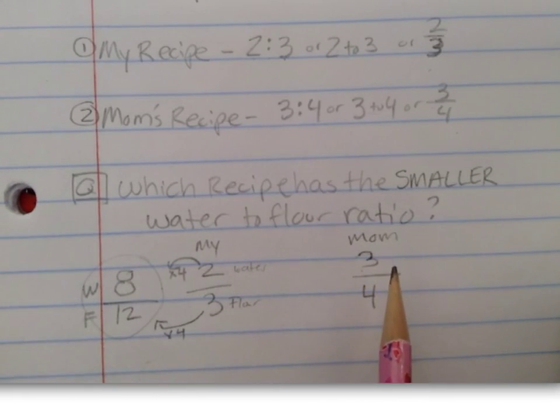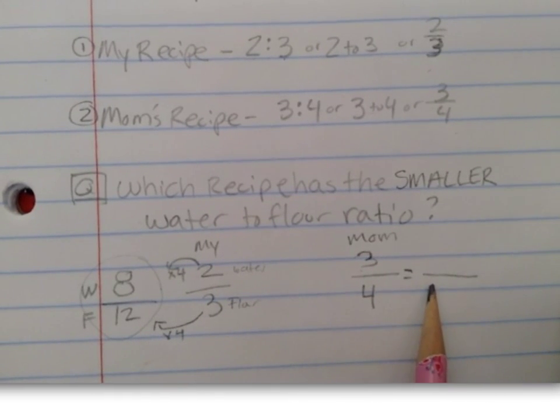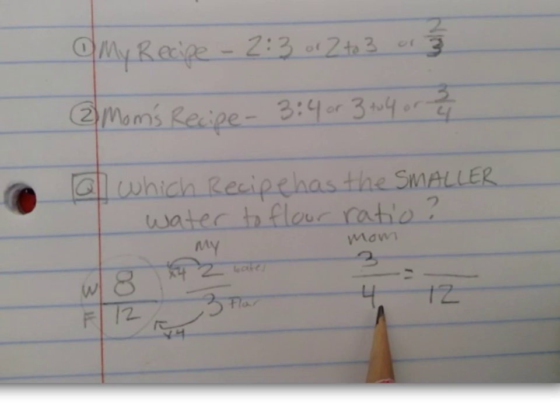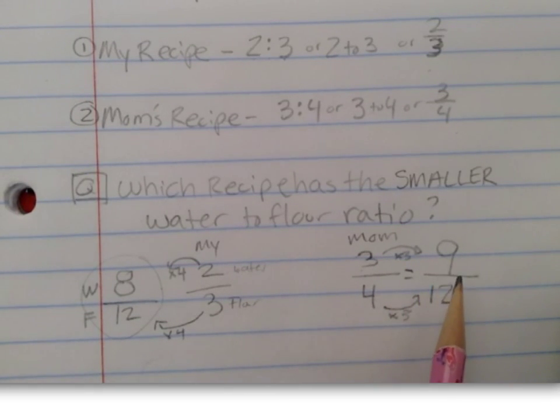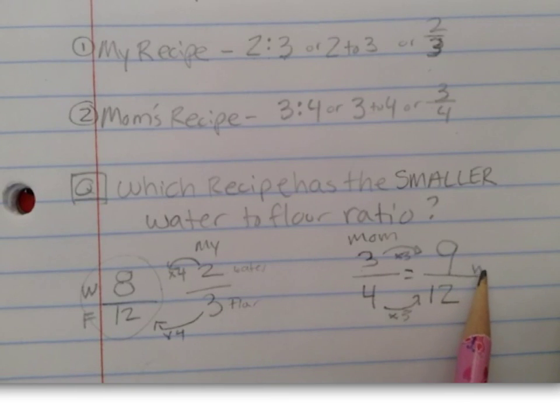Now, if I want to try to get my mom's recipe to be in an equivalent ratio, I need to also get her ratio of water to flour to also have 12 cups of flour. So I triple her recipe. Three times three gives me nine. So for my mom's recipe, she needs nine cups of water for every 12 cups of flour.